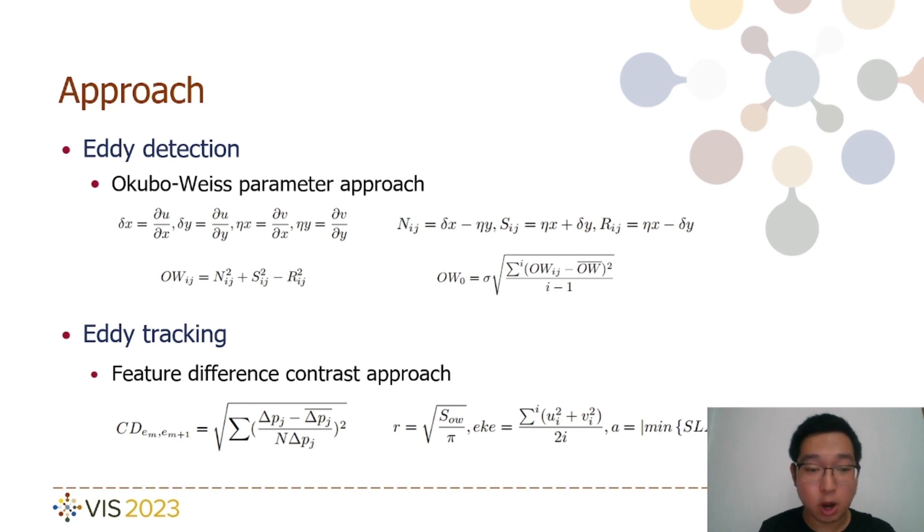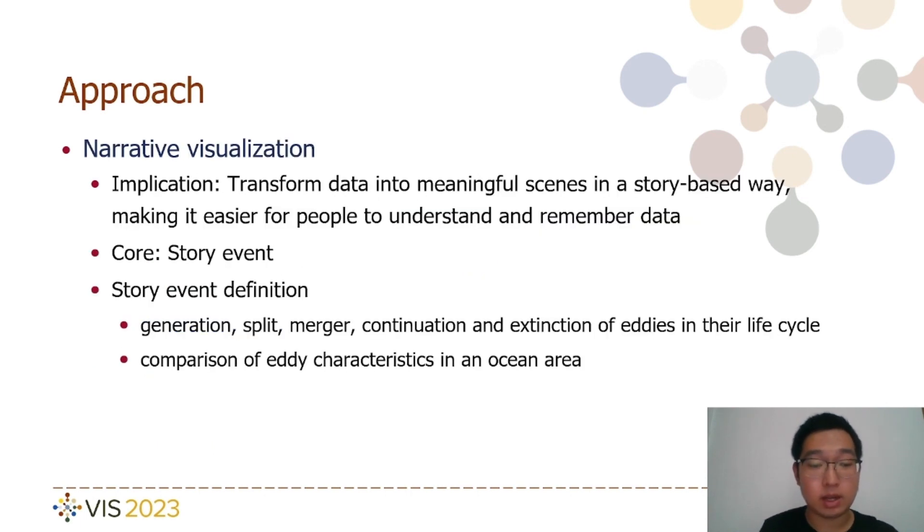Eddy tracking is primarily achieved by comparing differences in physical quantity characteristics, with distance, radius, kinetic energy, and amplitude serving as the key characteristics. The principle of narrative visualization is to convert data into coherent narratives, creating meaningful scenarios that enhance people's comprehension and retention of the data. In our case, we focus on eddies as the central elements of our narrative. We depict their lifecycle including their formation, splitting, merging, persistence, and extinction, or compare various eddy characteristics within a specific ocean region as the storyline events. For instance, this approach helps to convert complex data in a more understandable and memorable manner.